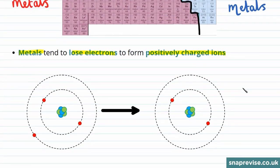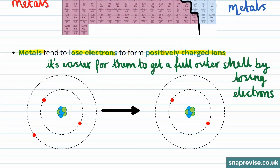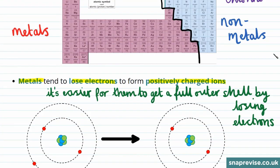And this is why we tend to see that metals lose electrons in order to form positively charged ions. This is because it's easier for them to gain a full outer shell by losing electrons rather than gaining electrons.